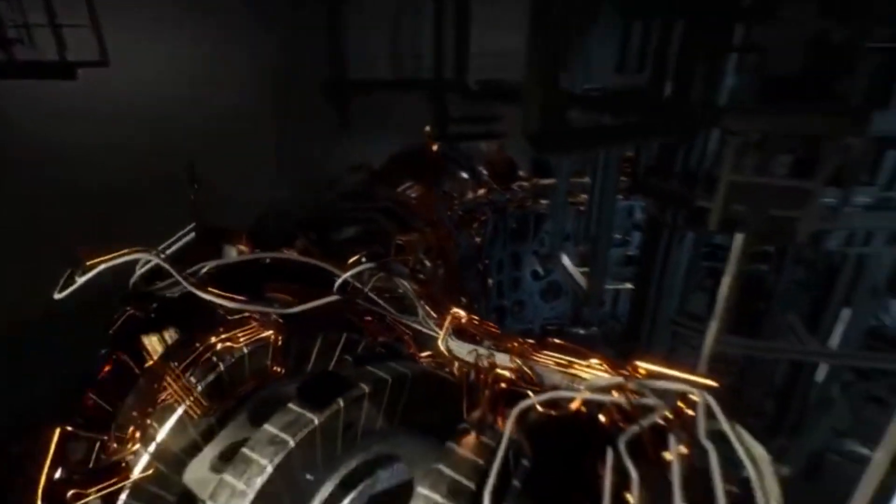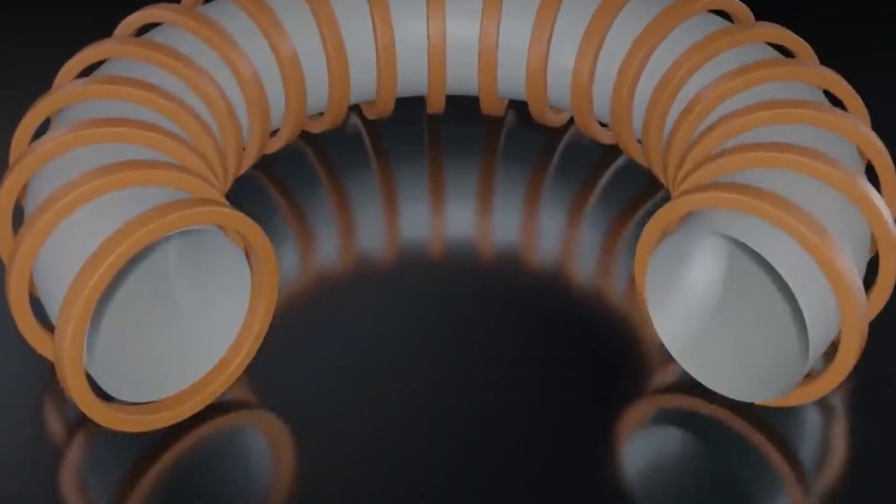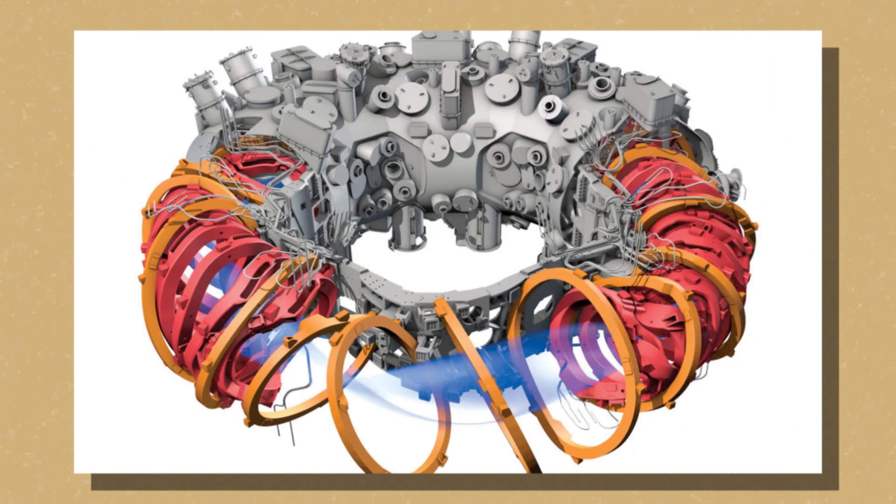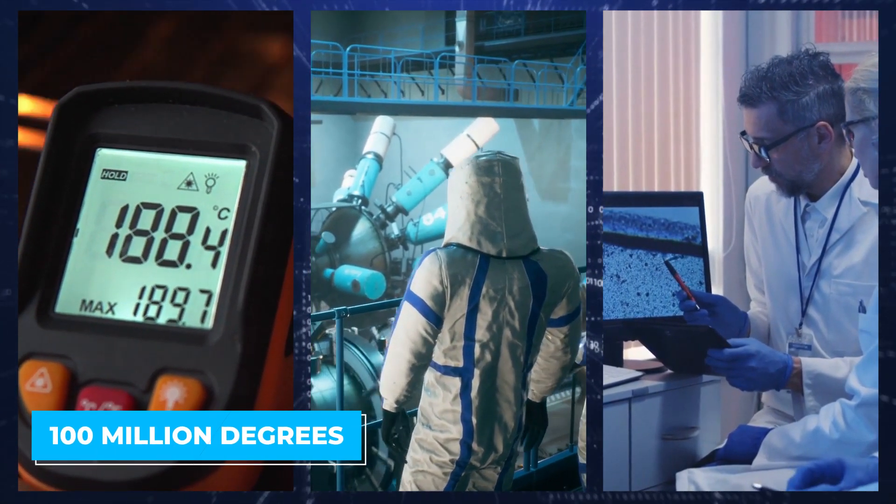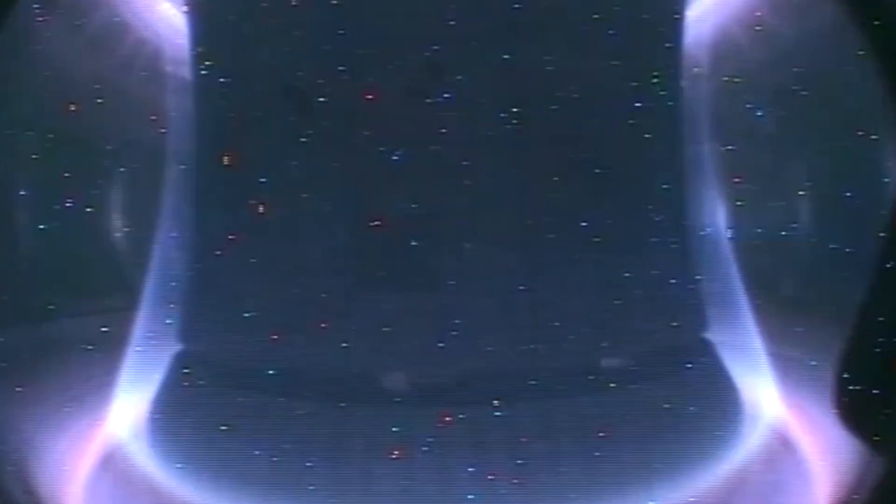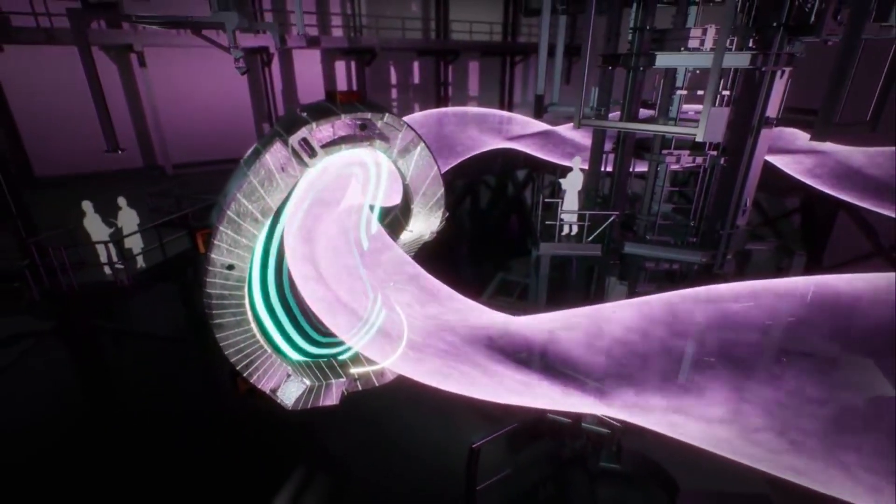This innovative device, resembling a donut-shaped core, is designed to hold plasma formed by colliding hydrogen atoms. By subjecting the plasma to intense microwave blasts, scientists were able to elevate its temperature to a staggering 100 million degrees. At this extreme heat, the nuclei of the atoms fuse, creating helium and generating energy in a process that mirrors the sun's core.